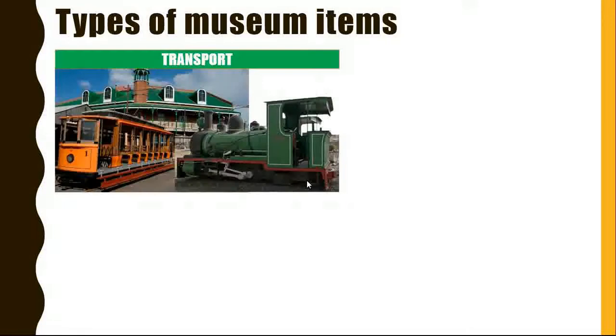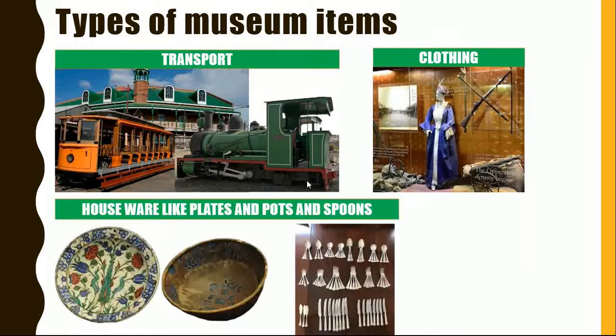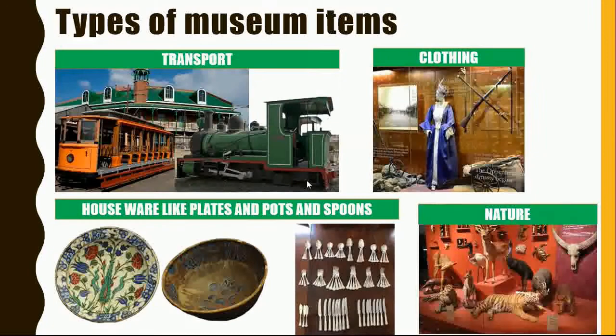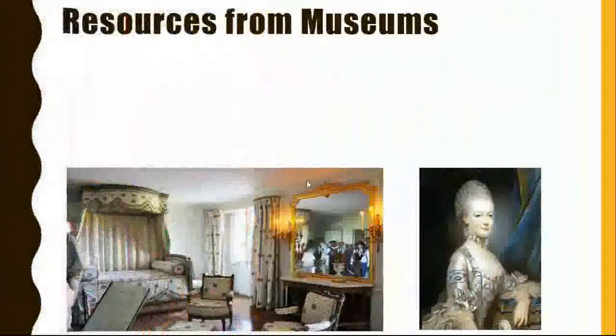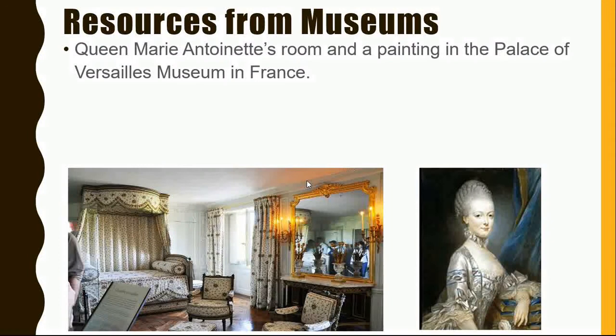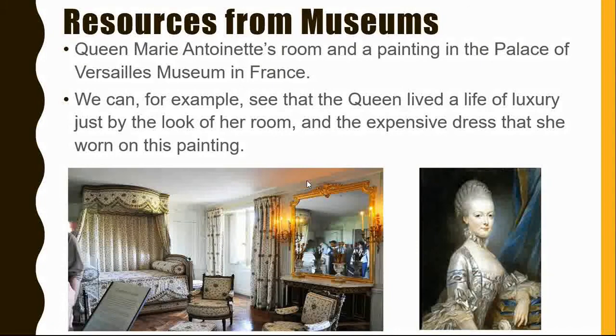Here are some different types of museum items: transport, clothing, houseware like plates, pots and spoons, and nature. Resources from museums: Queen Mary Antoinette's room and a painting in the Palace of Versailles Museum in France shows us how she lived. We can, for example, see that the Queen lived a life of luxury just by the look of a room and the expensive dress that she wore in this painting.